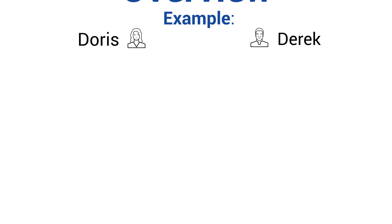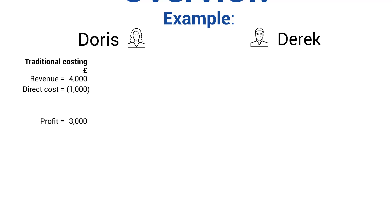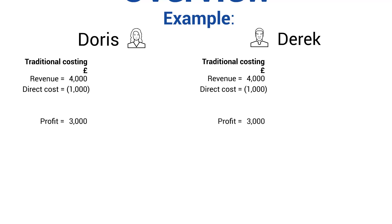The cost to Lou of bringing in this wool is £1,000. So under a traditional costing system, that's quite simple: the revenue generated from Doris is £4,000, the cost to Lou of buying that wool to sell to Doris is £1,000, so profit is £3,000 — nice and simple. The same applies to Derek: he buys £4,000 worth, this costs Lou £1,000, so again £3,000 profit. They're both equally profitable.